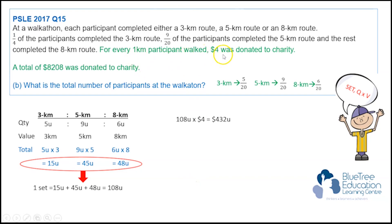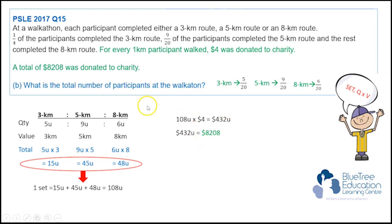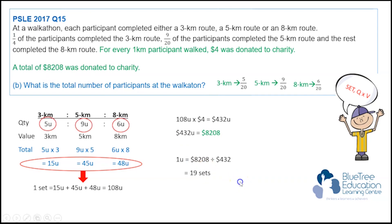It is also mentioned that $4 will be donated for every 1km that a participant walked. So 108 units times $4 gives 432 units, and this is equal to the total amount donated to charity, which is $8,208. Solving for one unit tells us that it is 19 sets.